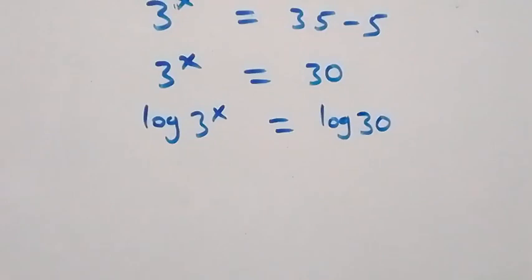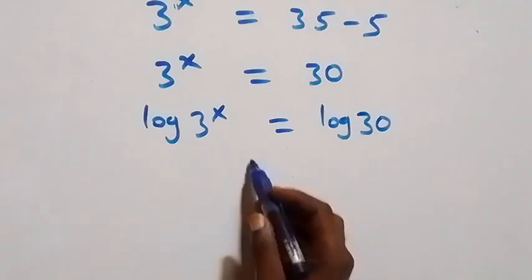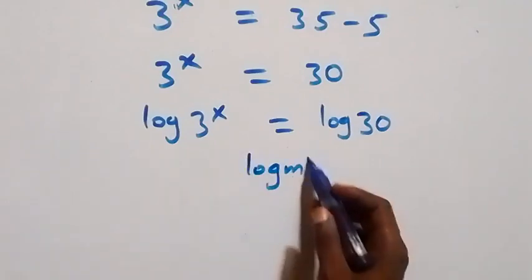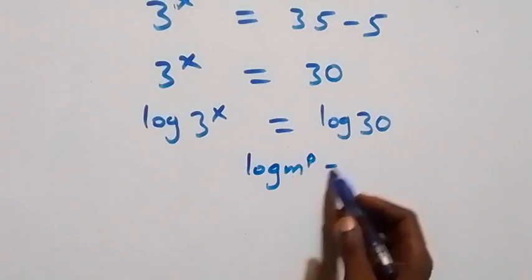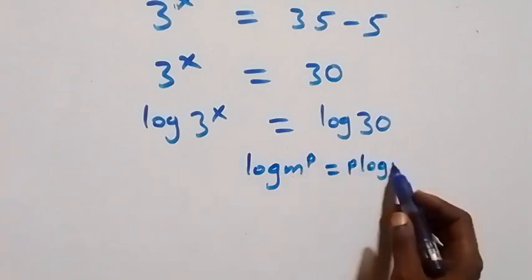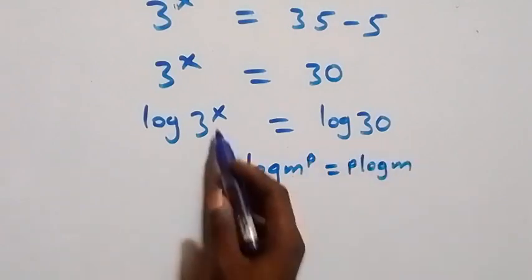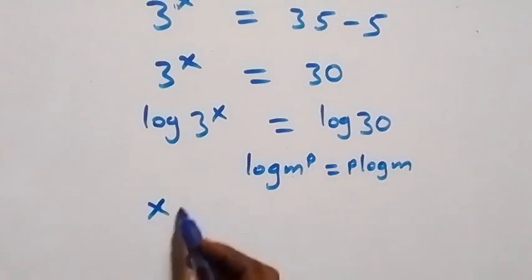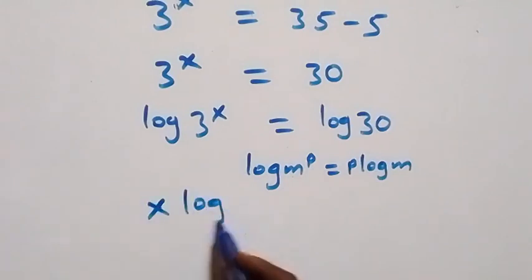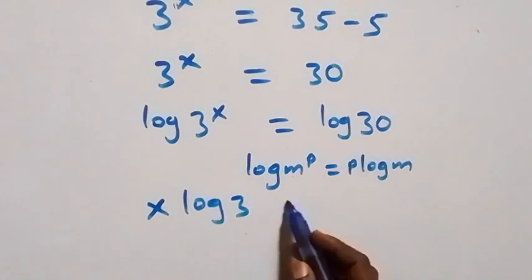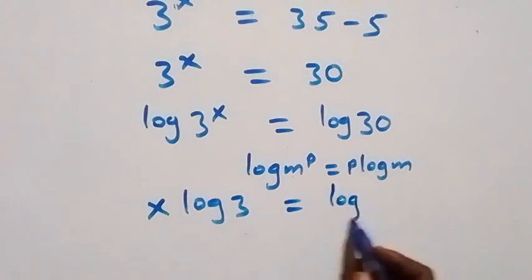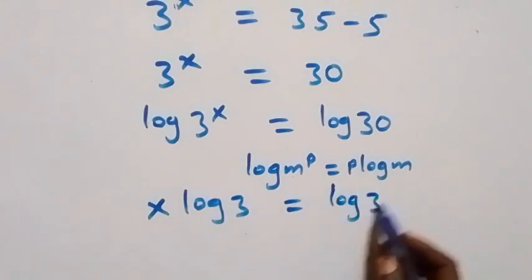From the power law of logarithm: when we have log m raised to power p, it is the same as p times log m. So here this becomes x log 3 equals log 30.